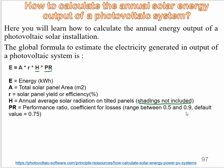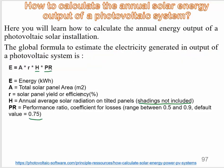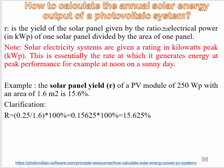The range of the PR factor is between 0.5 and 0.9, and the default value is 0.75. Now, how to calculate R: R is the efficiency or solar panel yield. To calculate R, R equals the electrical power in kilowatt peak (kWp) of one solar panel divided by the area of one panel.